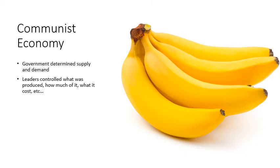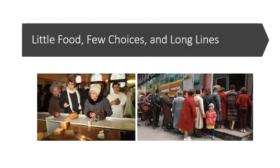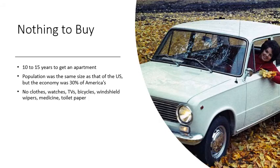Another aspect is the communist economy — there is no free market. The government controls the economy. The government controls everything. Leaders determined supply and demand — they controlled what was produced, how much of it, and what it cost. This led to little food, few choices, and long lines. People would have to wait for hours for a loaf of bread or some corn or cereal. You don't go to the store and pick out whatever you want — you wait in line and the government gives it to you. The government supplies your shampoo, your soap. Because of this government control, there is nothing to buy.